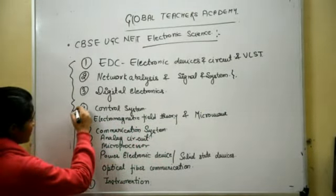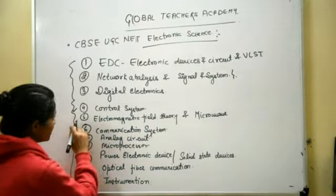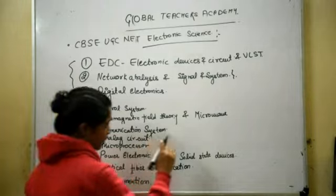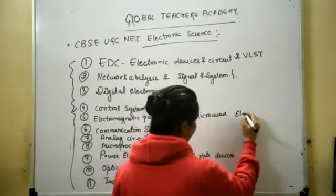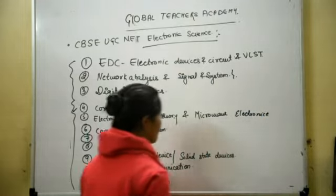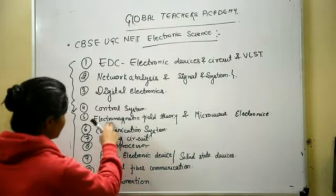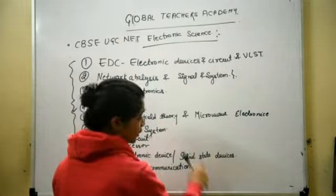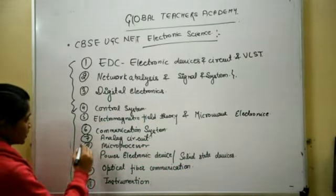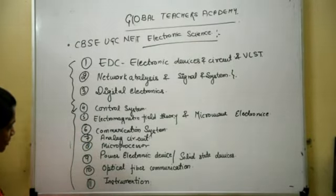The fourth unit is Control System. The fifth unit is Electromagnetic Field Theory and Microwave Electronics. Microwave Electronics is a different subject, but in the UGC Net syllabus it is combined with Electromagnetic Field Theory. The sixth unit is Communication System.